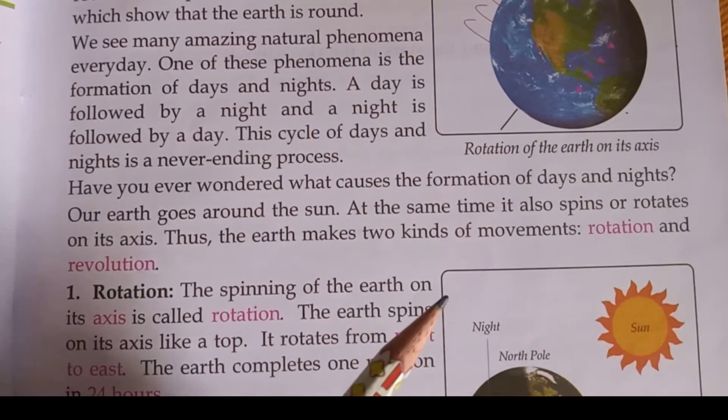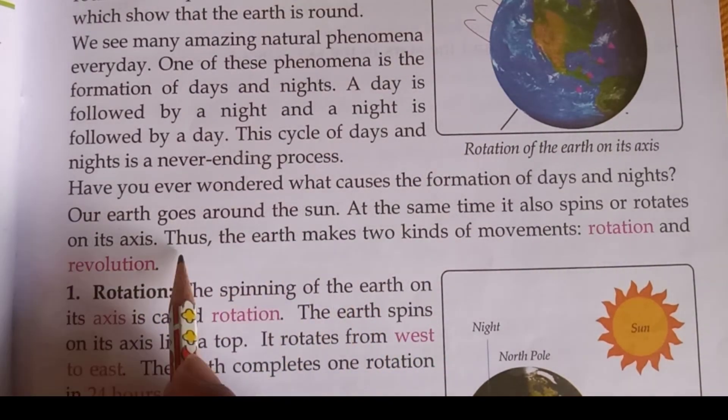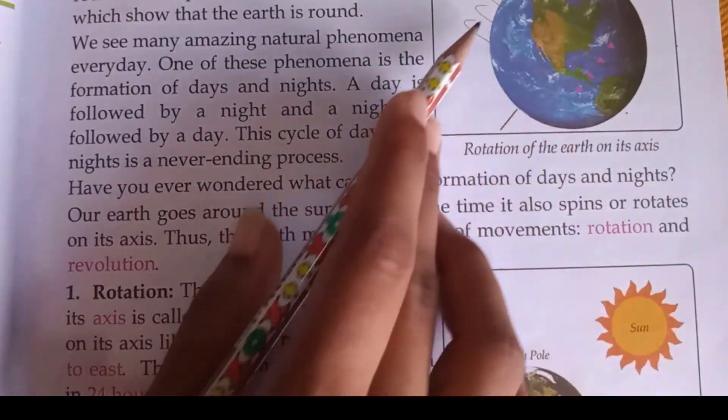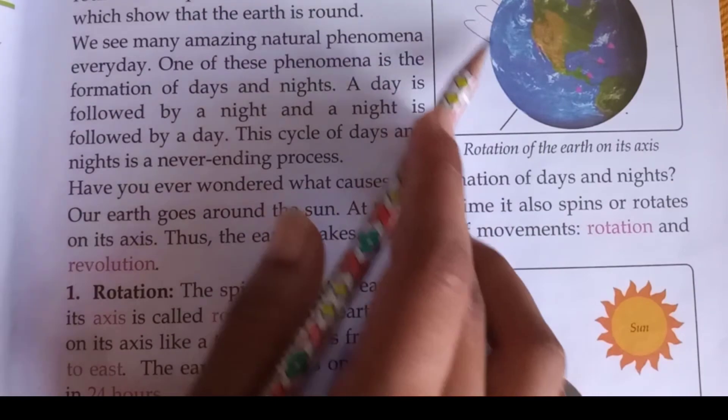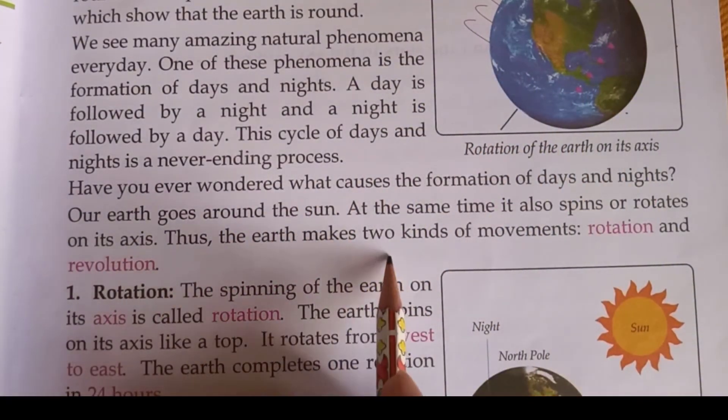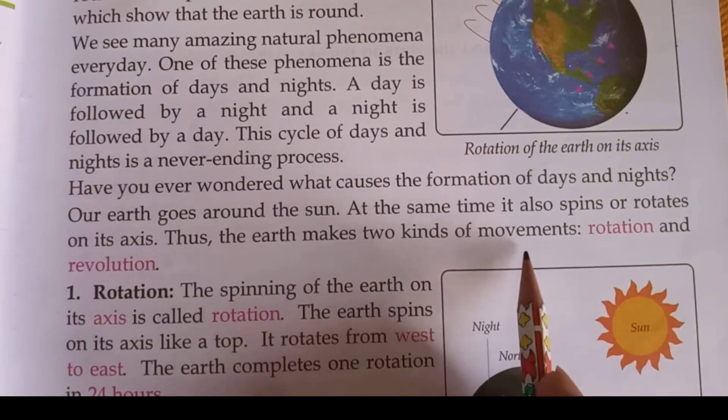Saath hi yeh apne dhuri par ghumti bhi hai. Yeh iski dhuri hai aur is par bhi is tarike se ghumti. Yeh lag rahe hain ki is tarike se yeh ghumti hai apne dhuri par bhi. Thus, the Earth makes two kinds of movements.